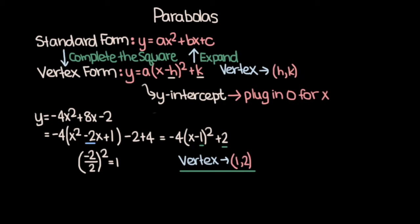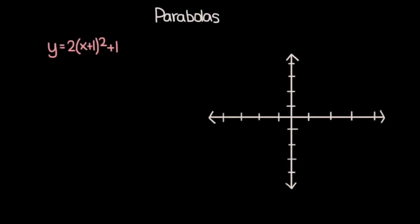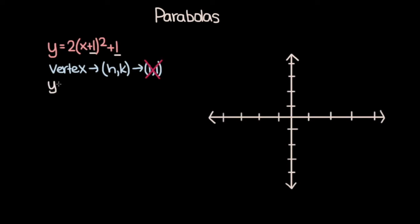We will do an example of graphing a parabola given in vertex form. We want to do a complete sketch of the parabola y is equal to 2 times x plus 1 whole squared plus 1. Let's start off by finding the vertex. Your first instinct might be that h is 1 and k is 1, so the vertex is the point 1 comma 1, but that is incorrect. Let's recall exactly what vertex form is: y is equal to a times x minus h whole squared plus k.